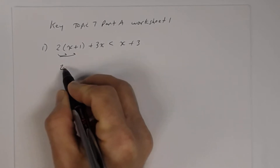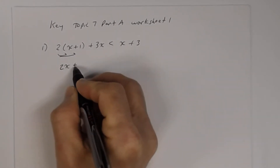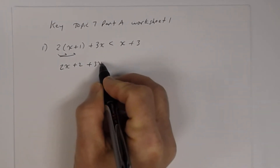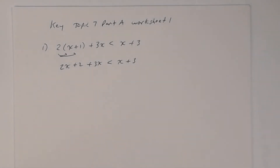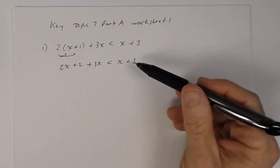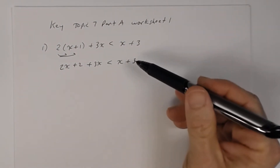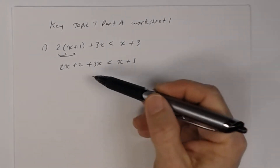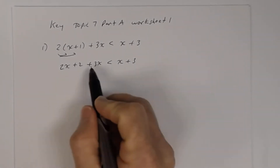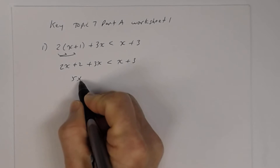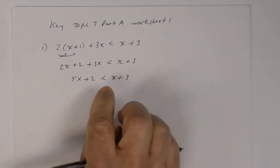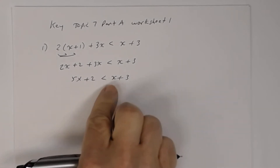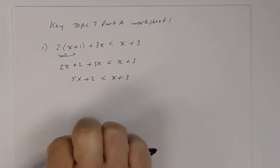Using the distributive property, we get 2x plus 2 plus 3x is less than x plus 3. Now we combine like terms, solving this linear inequality just like a linear equation. You can bring all the variables to one side and constants to the other.